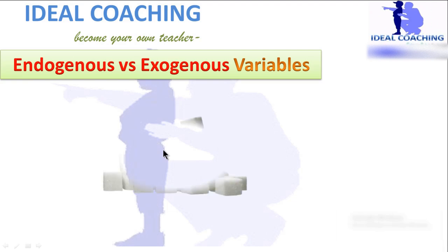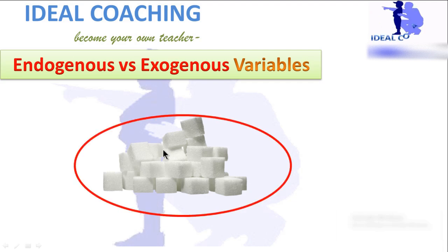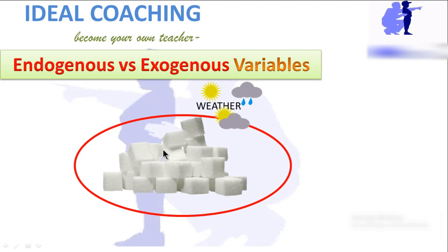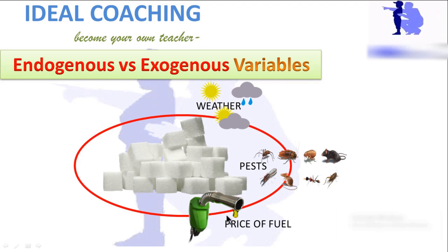For example, when we talk about effectively producing sugar, then sugar will be the endogenous variable because it depends upon a few factors other than sugar itself — for example, weather, pests, and price of fuel. These factors affect the production of sugar, so sugar is endogenous and these factors are exogenous.